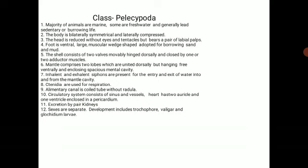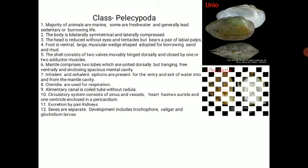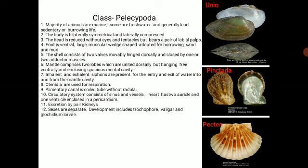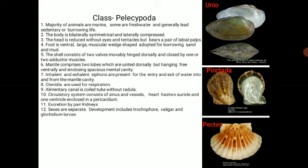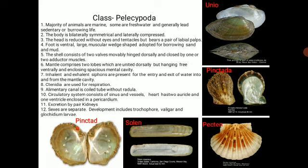Excretion takes place by the kidney. Sexes are separate and development is indirect, including the trochophore larva, veliger larva, or glochidium larva. Examples include Unio, Pinctada, Pecten, and Solen.